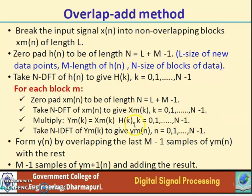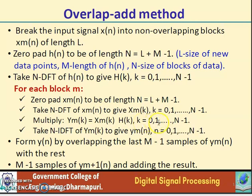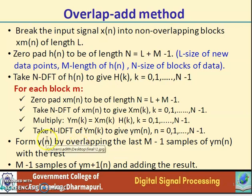Now we have two DFTs: H(k) and Xm(k). We are going to multiply these two DFTs to get Ym(k). So Ym(k) equals Xm(k) multiplied by H(k), where k varies from 0 to N minus 1. After getting Ym(k), we take the N-point IDFT of Ym(k) to obtain ym(n), where n varies from 0 to N minus 1. In this way, we can find the output sequence of each block from H(k) and Xm(k), and from each ym(n) we form the final y(n).